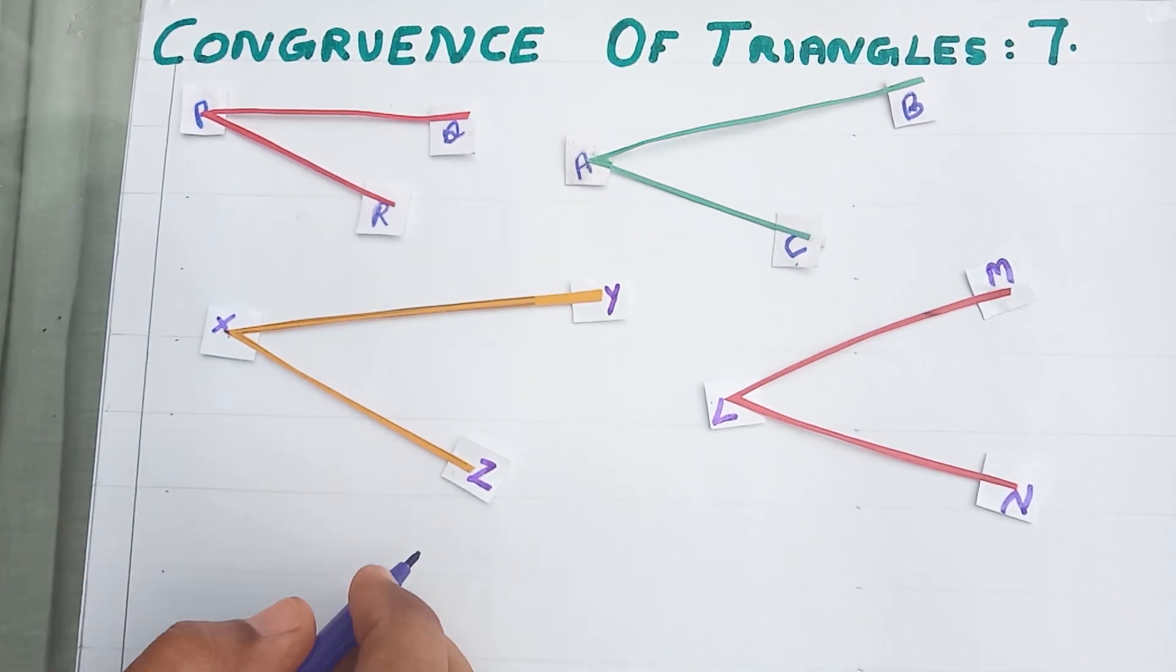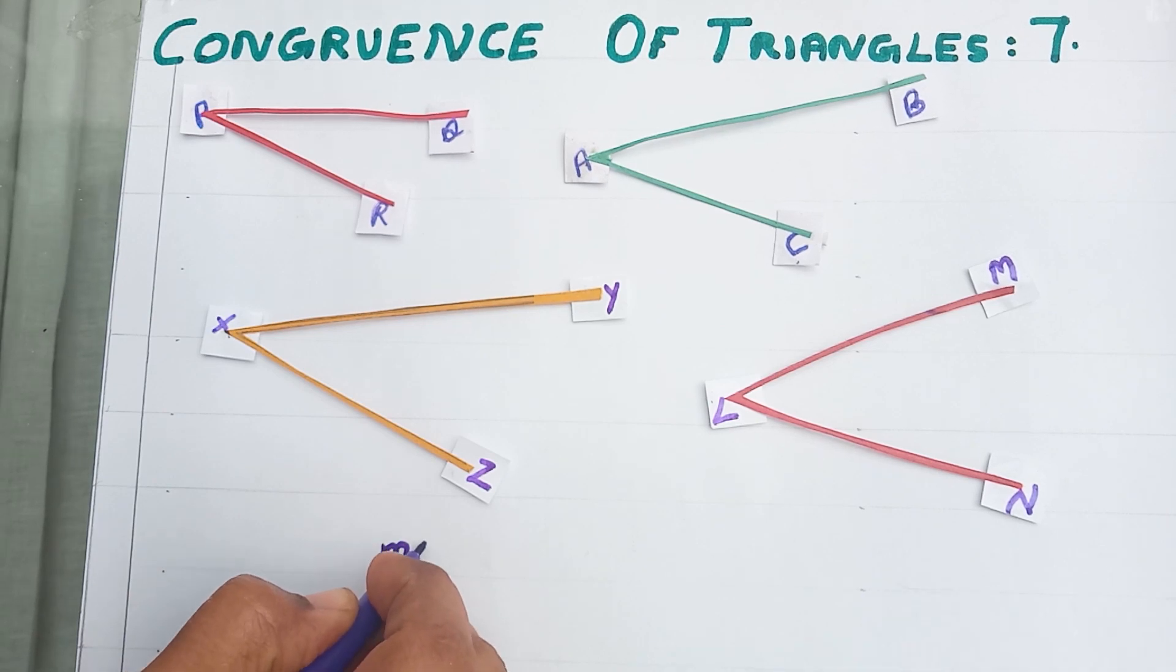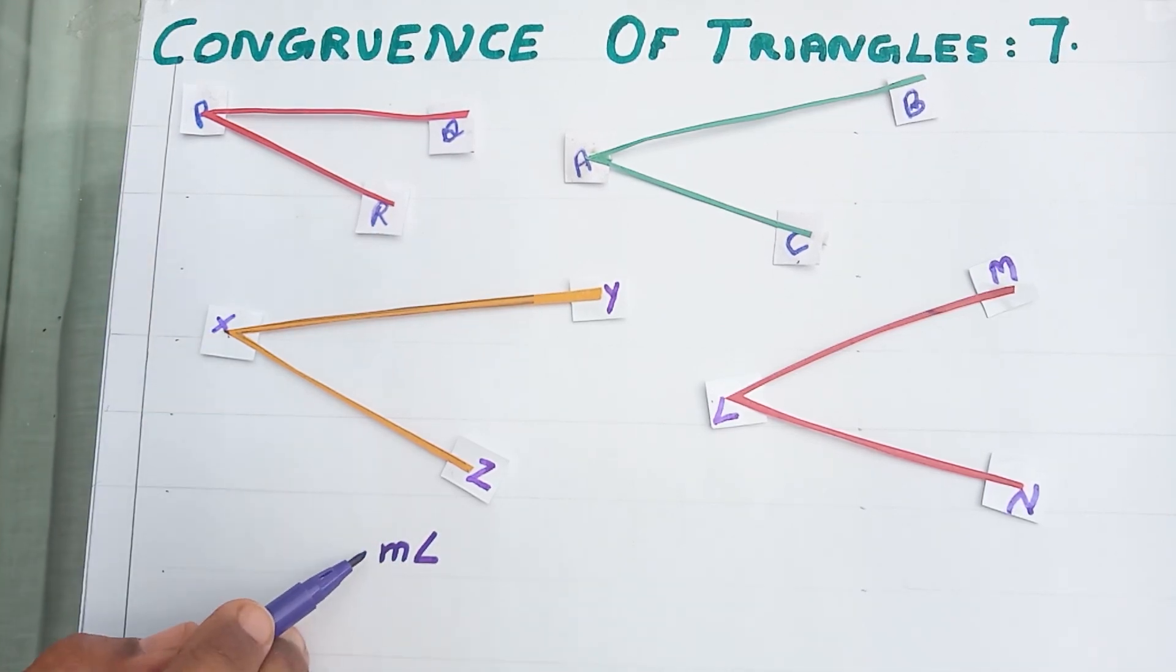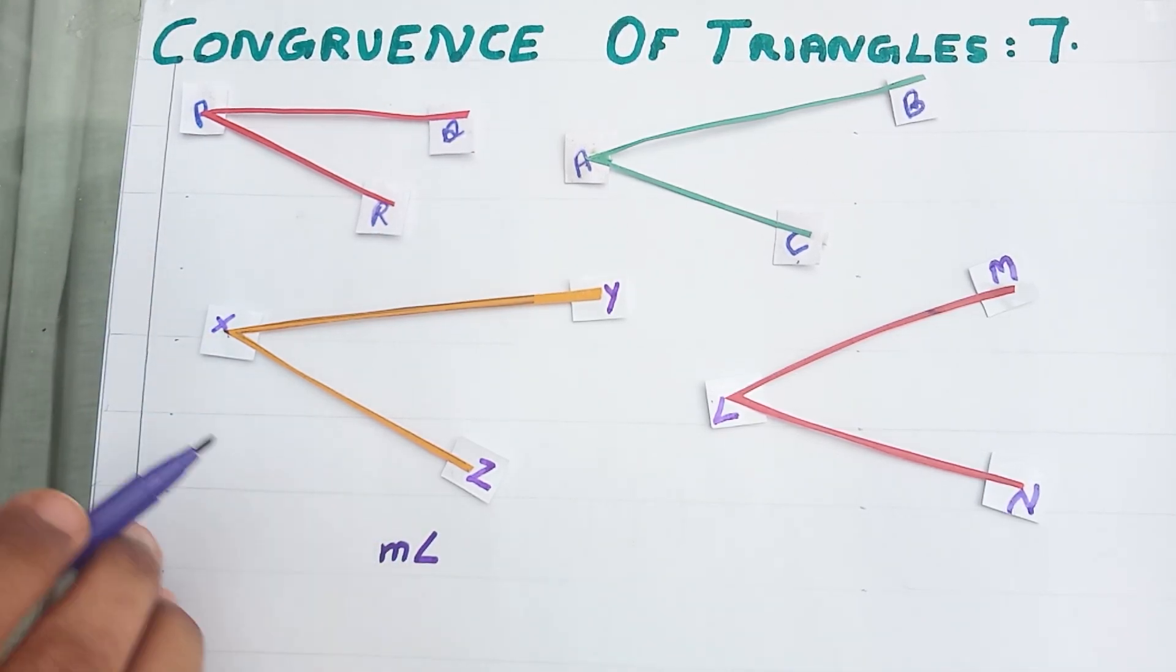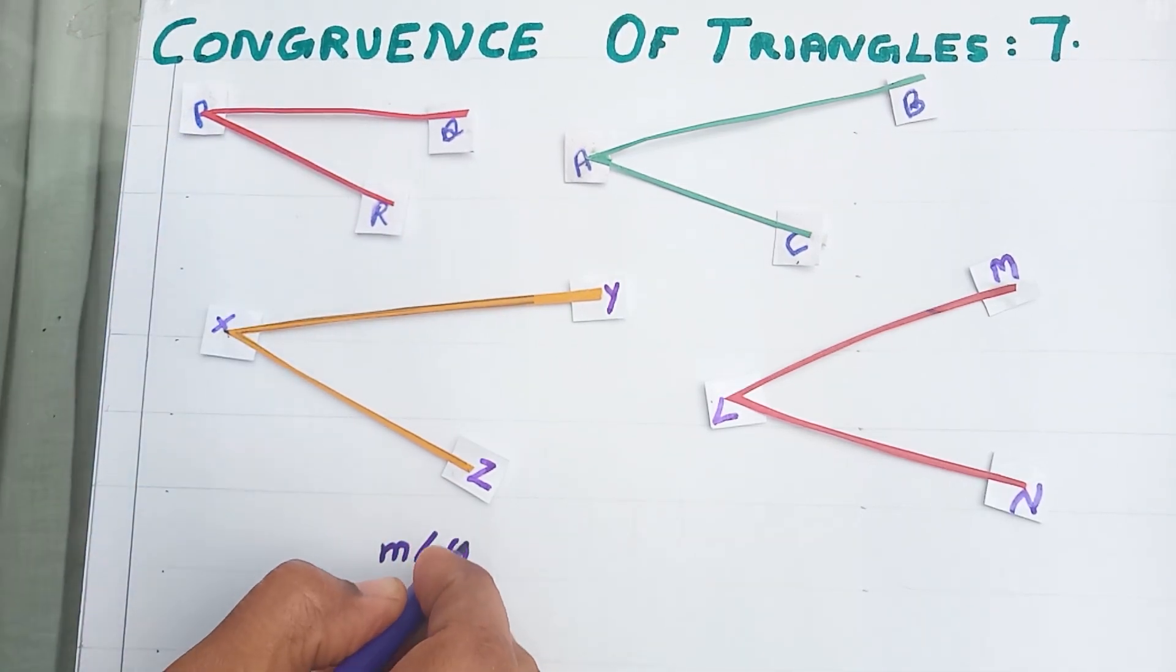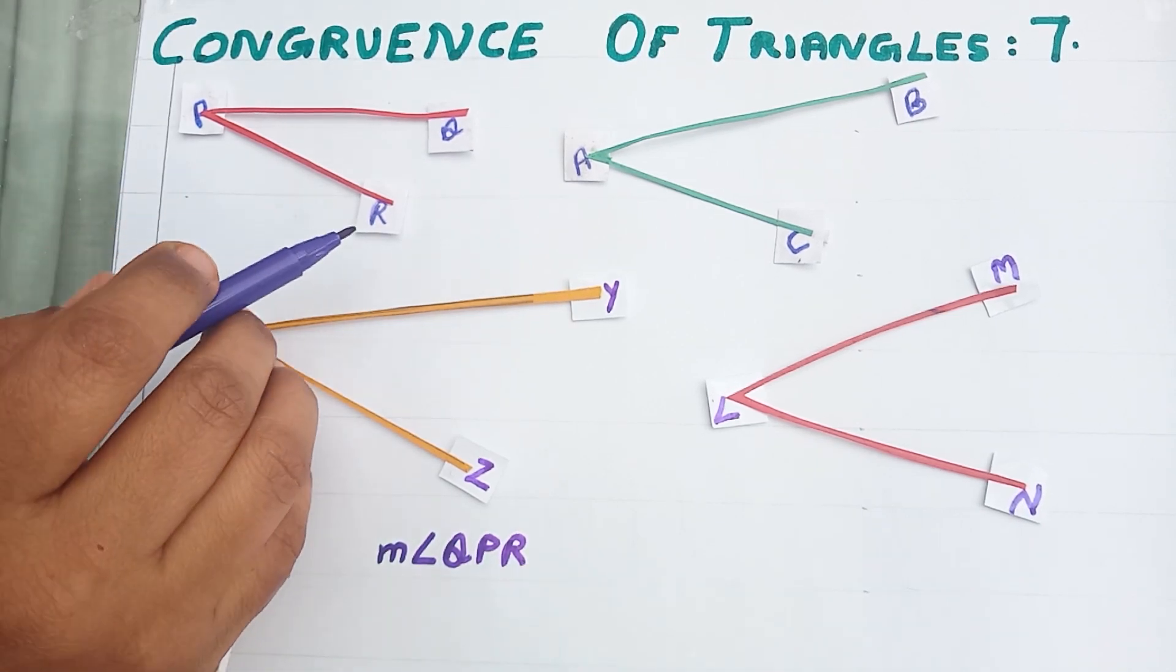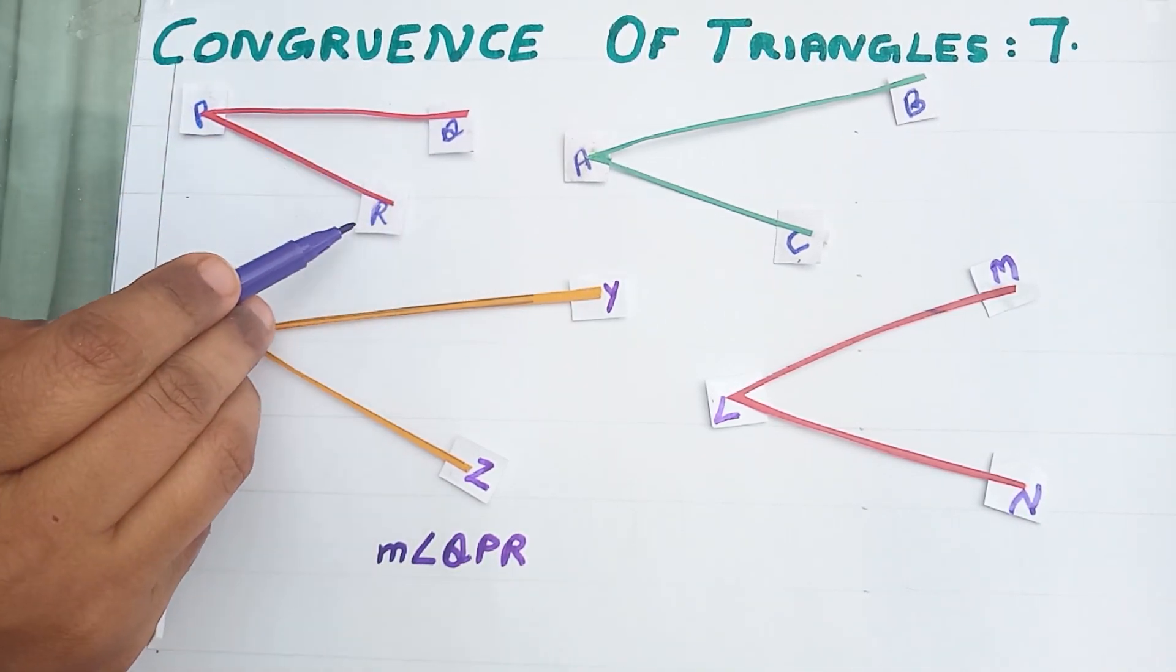So, I am going to write down measure of angle. This M denotes measure. Measure of angle QPR. QPR. We should not read PQR. Why?